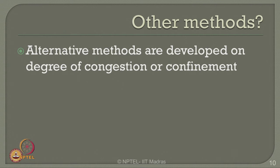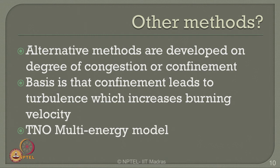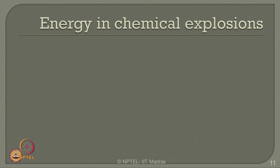Other alternative methods are developed based on the degree of congestion or confinement. The basis is that confinement leads to turbulence, which increases the burning velocity. The TNO multi-energy model is another alternative available in the literature. The Baker-Stilhoe model can also be used directly to estimate damages from overpressure.